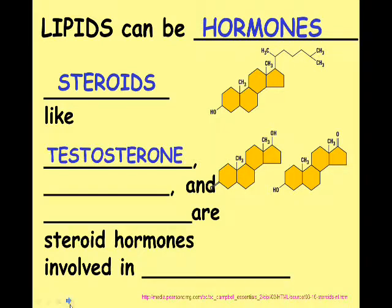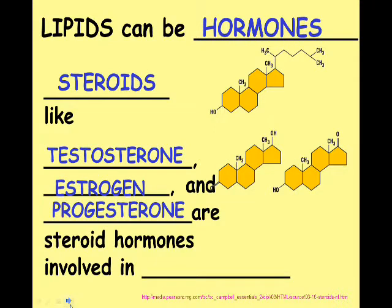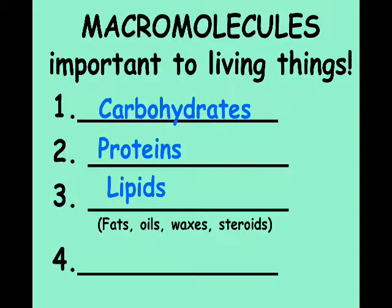Some examples of steroid hormones: testosterone is a male sex hormone that kicks in at puberty and causes body changes like growing facial hair and building muscle. Females also have steroid hormones — estrogen and progesterone are important hormones that maintain the reproductive system and cause body changes that enable reproduction. Those are lipid hormones. That's the end of lipids — stay tuned for our last molecule, which is coming in our next slideshow.